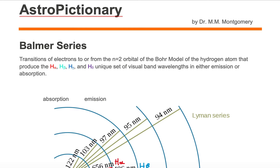The Balmer series also has two other wavelengths in the ultraviolet band in addition to the H alpha, H beta, H gamma, and H delta visual band wavelengths, but we're only going to focus on the visual band wavelengths in this example of the Balmer series.